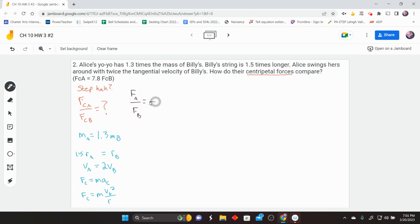And this is going to be equal to something over something. We'll make the top something equal to F sub A. So what that's going to be is mass Alice, velocity of Alice squared over radius of Alice. And we want to make the bottom something equal to the bottom thing. So that's going to be mass of Billy, velocity of Billy squared over radius of Billy.